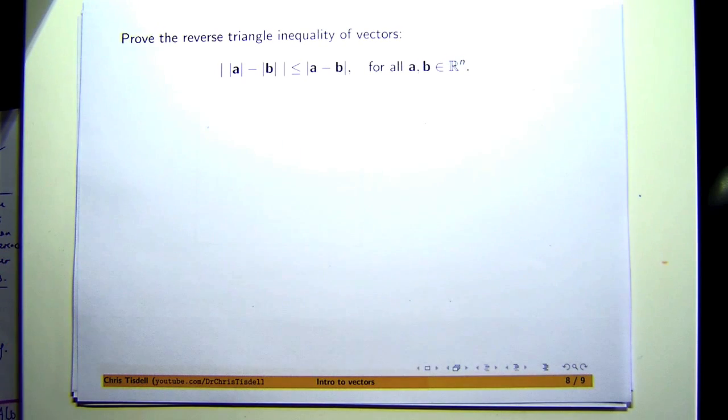I'm going to show you how to do this two ways. The first is going to use a dot product, and the second is just going to use the regular triangle inequality. The second way is probably faster than the first way, but I think they're both pretty interesting.